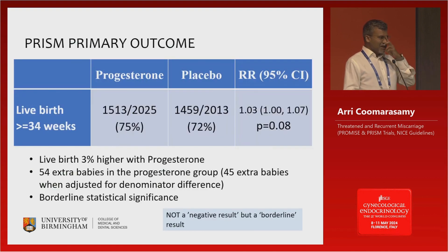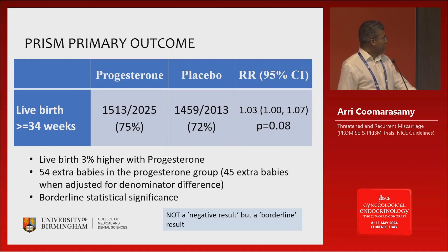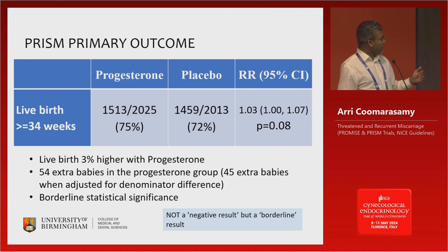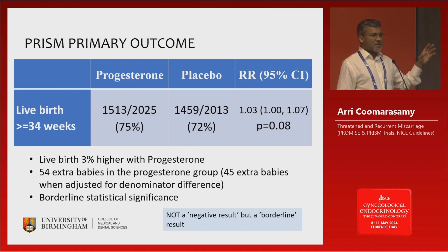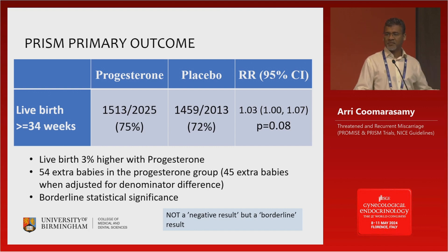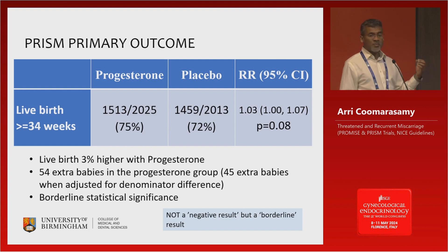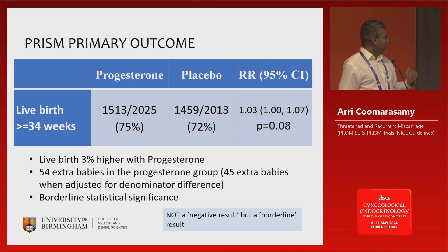When we looked at live birth, progesterone had a live birth rate of 75%, placebo 72% — so there was a 3% higher live birth rate favoring progesterone. The confidence interval goes from 1.00 to 1.07, and the p-value is 0.08. Conventionally, this would have been classified as statistically non-significant, and people would have walked away from it. There were 54 extra babies with progesterone, and this would have been classified as borderline statistical significance.